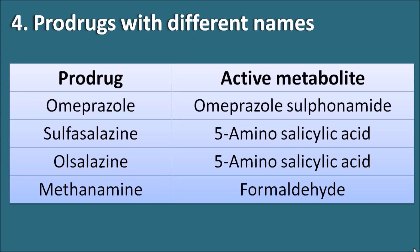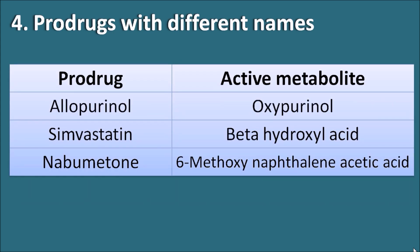Allopurinol, an anti-gout agent, is converted into oxypurinol, which inhibits the xanthine oxidase enzyme, thereby inhibiting the biosynthesis of uric acid. Simvastatin, an antihyperlipidemic drug, is converted into its beta-hydroxy acid derivative, responsible for inhibiting the HMG-CoA reductase enzyme. Nabumetone, a non-steroidal anti-inflammatory drug, is converted into 6-methoxy-2-naphthylacetic acid as its active metabolite. All of these are prodrugs that are converted into active metabolites within the body.